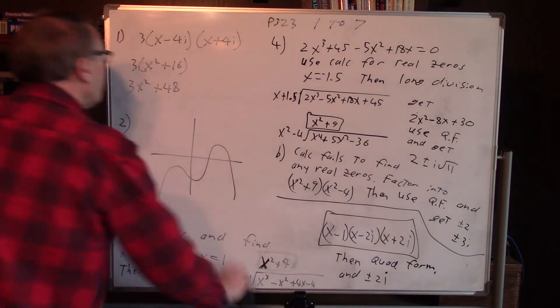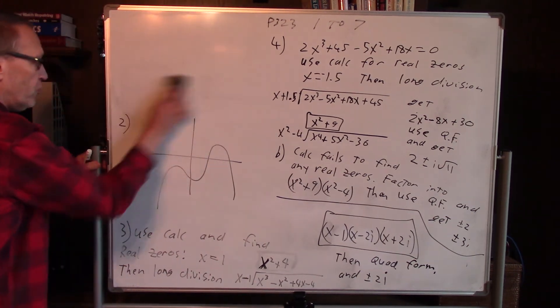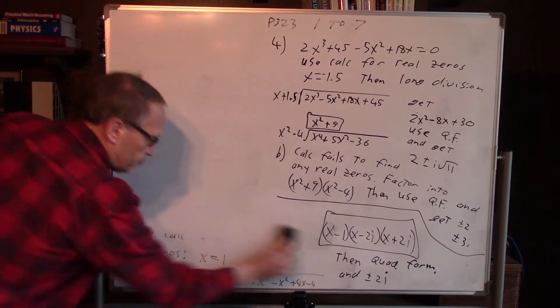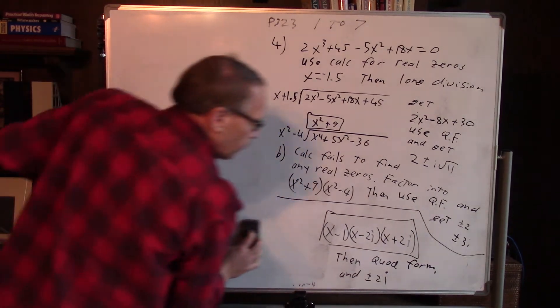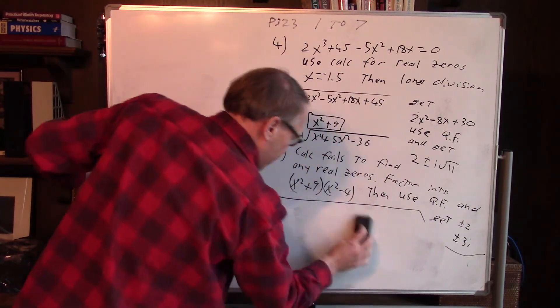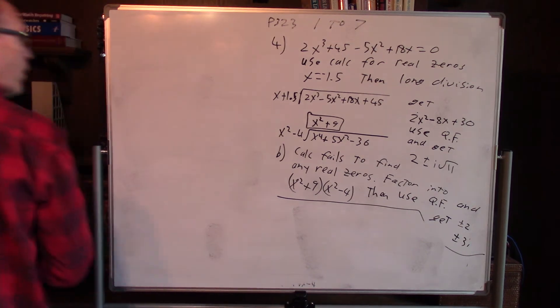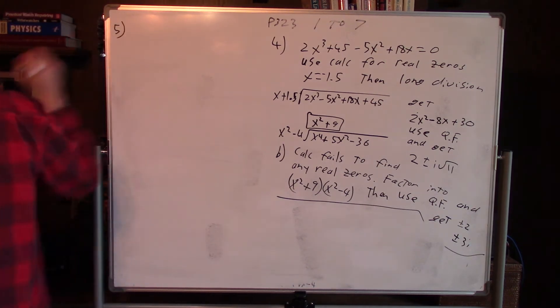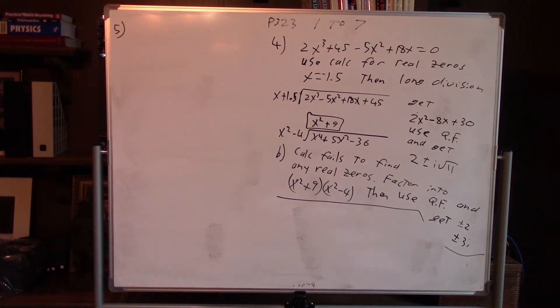Let's move on to number 5. We have find the domain of that function. x cannot be 1, that's it, because that causes division by 0.